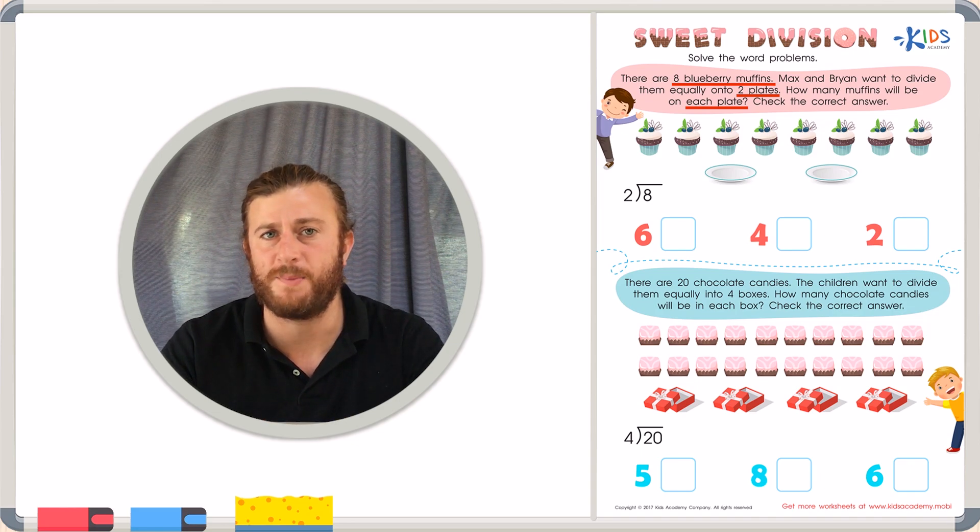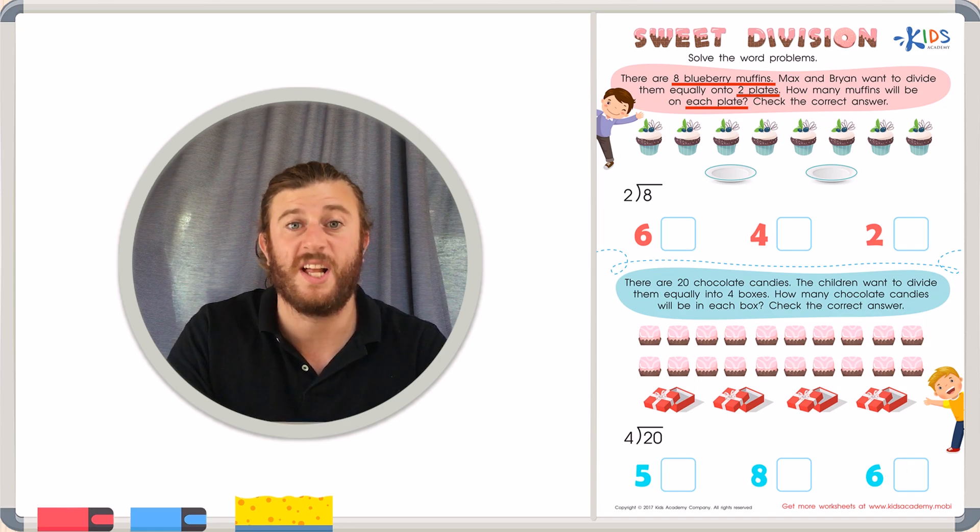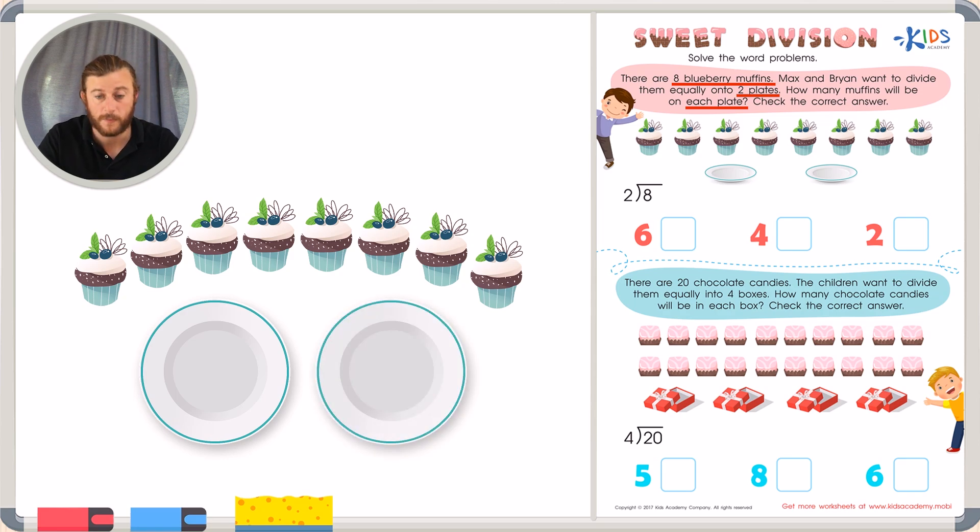Whenever I have a division problem like this, my first strategy is going to be to draw out the problem. So let's start by drawing out two plates. Plate one and plate two. Now they want to put the muffins equally on each plate. So let's start by putting one muffin on one plate, and then another muffin on the other plate, and count the muffins until we reach eight, giving an equal number to each plate.